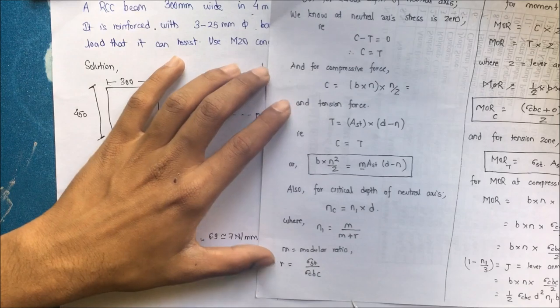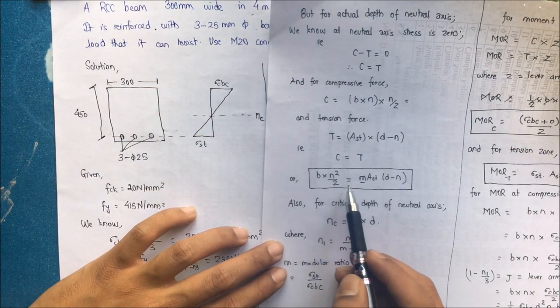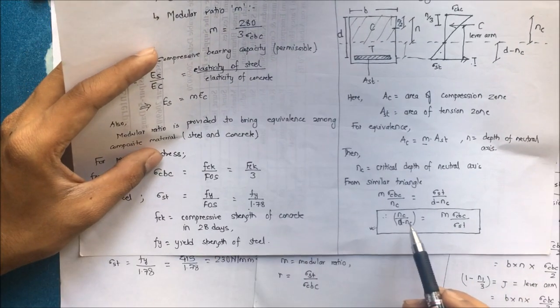We have here Nc is equal to N dash into D, and N dash is equal to M by M plus R. Again, we substitute over there.